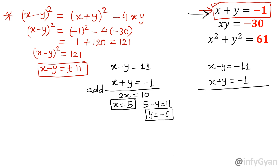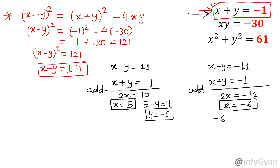Now the second case where x minus y equals negative 11. Adding with equation 3 (x plus y equals negative 1), we get 2x equals negative 12, so x equals negative 6. Substituting x equals negative 6 into x minus y equals negative 11 gives negative 6 minus y equals negative 11, so y equals 5. So the two sets are: first set x=5, y=-6; second set x=-6, y=5.